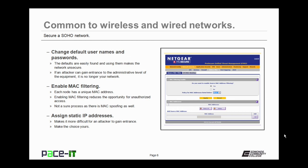You can also assign static IP addresses as another method of securing a network. This makes it a little bit more difficult for an outside attacker to gain entrance if each node is assigned a specific IP address, as opposed to relying upon DHCP. It does make it a little bit more difficult to manage the network, but it does make it that much more secure. And if you do assign static IP addresses, make it your IP address — don't use the default IP addressing scheme.